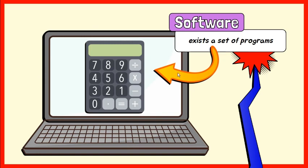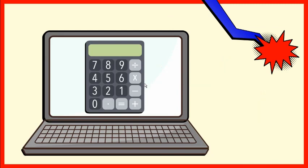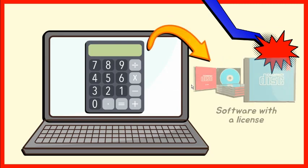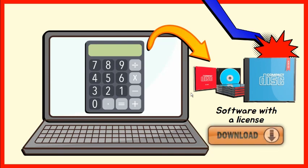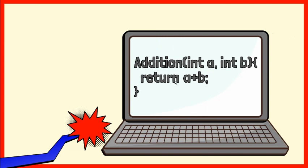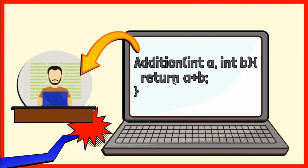This program is included in a calculator. A calculator is software where there exists a set of programs for operations such as addition, subtraction, multiplication, and division. Once software is developed, it is put on a medium like CD or DVD with a license, and it will be marketed. Software can also be downloaded from the web. The various programs that make up software are subject to copyright, which is the right of the programmers who wrote the program codes.